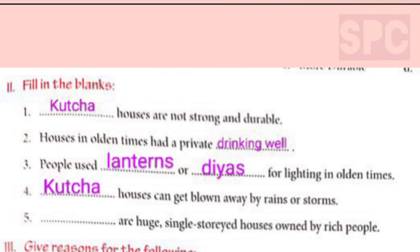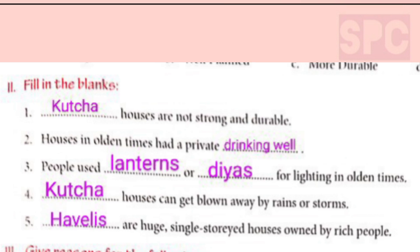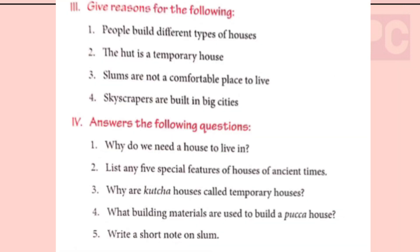Question 5: Dash are huge single storied houses owned by rich people. Answer: havelis. Havelis are huge single storied houses owned by rich people.